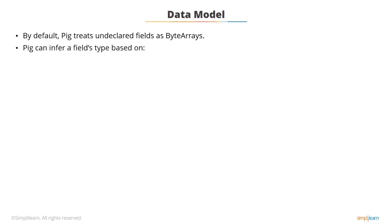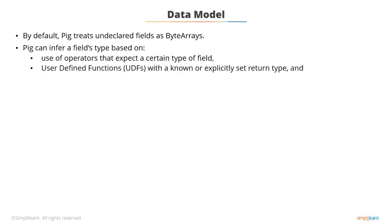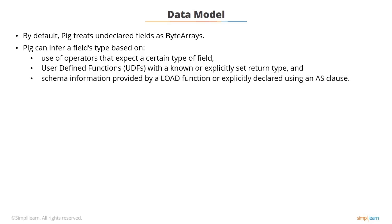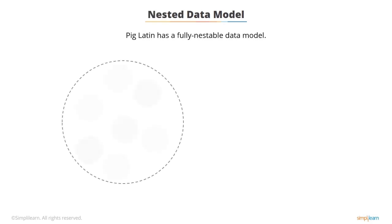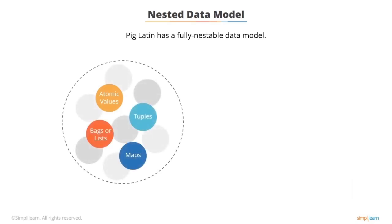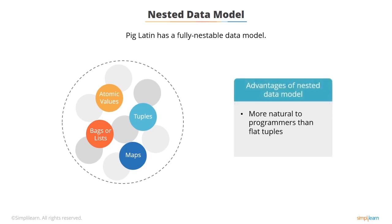PIG can infer a field's type based on the use of operators that explain a certain type of field. It can also use user-defined functions, or UDFs, with a known or explicitly set return type. Furthermore, it can infer the field type based on schema information provided by a load function or explicitly declared using an AS clause. Please note that type conversion is lazy, which means the data type is enforced at the point of execution only. PIG Latin has a fully nestable data model with atomic values, tuples, bags or lists, and maps. This implies one data type can be nested within another. The advantage is that this is far more natural to programmers than flat tuples, and it also avoids expensive joins.